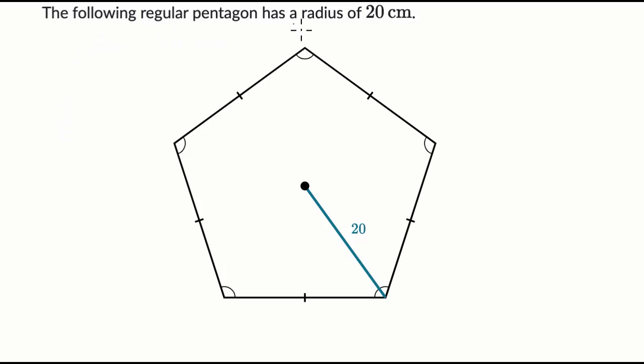We're told the following regular pentagon has a radius of 20 centimeters. That's the radius right over there from the center to one of the corners. What we want to do is figure out the area of this regular pentagon. So pause this video and have a go at it before we do this together.